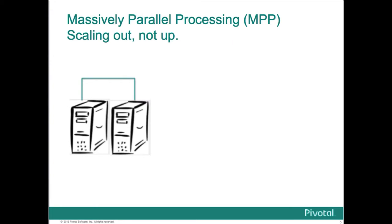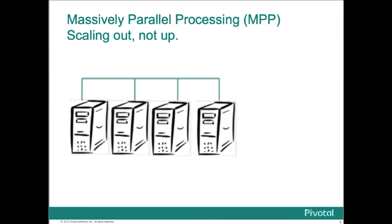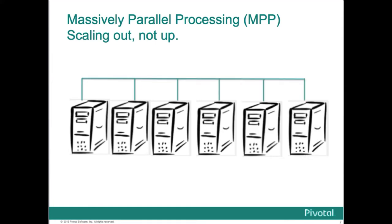In an MPP scale-out architecture, we increase computing power and storage by starting small and then adding capacity in the way of more small computers. In most MPP architectures today, the nodes are usually small Linux servers with enough CPU, RAM, and I/O power for the needs at hand. And when we run out of any of these resources, we add another node or two. Since each node has its own memory, operating system, CPU, and storage with its own set of disks, this architecture is known as a shared-nothing architecture.